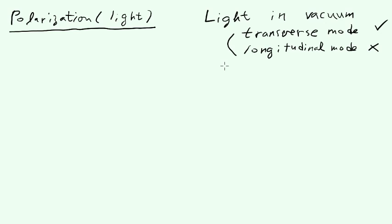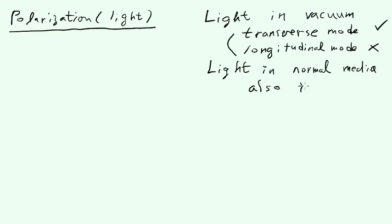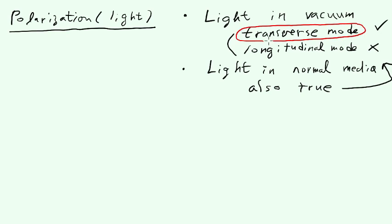It turns out this is also valid for light in many normal media. Now, it is known to be possible to generate light in a longitudinal mode — for instance, on a metallic surface. But in this lecture we're not going to consider that. We'll center our discussion on the transverse mode.